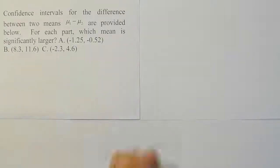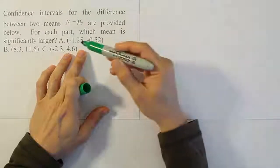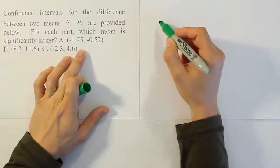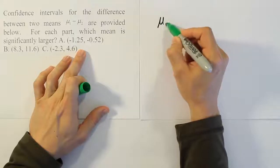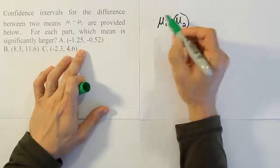So let's look at interval A. When we look at interval A, both terms in the interval are negative, right? Because of that, if they're both negative, it means that when we did the subtraction mu1 minus mu2, this guy had to be larger for A.